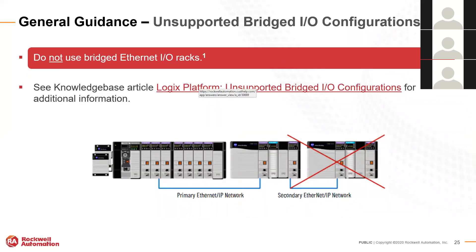Bridging networks is not supported in redundancy. The example shown — going from an EN2TR in slot zero to one in slot four of a remote IO chassis to then go to another chassis — might technically function, but it is not supported in a redundancy configuration. Don't attempt it. In practice, this situation is rarely seen in the field.